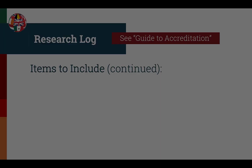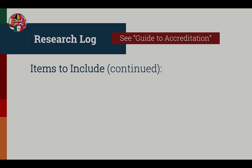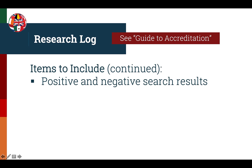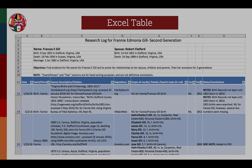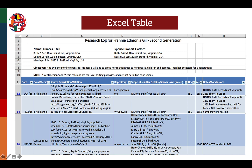Some examples of these items will be shown throughout the video. Be sure to include both positive and negative search results in the research log. The research log must contain a complete source citation for each source entry, and the purpose of the search must also be included. Remember that each of these required items does not need its own column in the research log if the information is clearly found in the citation. You can use any program or system for your research log as long as the final PDF is easily read and contains all the required elements.